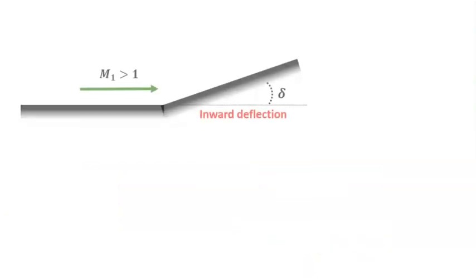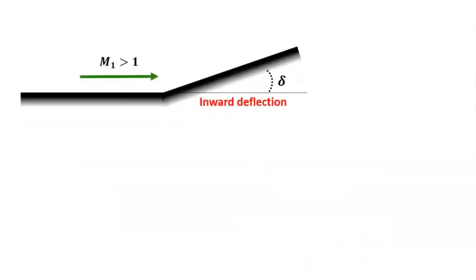Let's start with a simple diagram of a supersonic flow moving towards a surface. The surface is deflected into the flow, an inward deflection. In this case, the flow will produce an oblique shock wave.